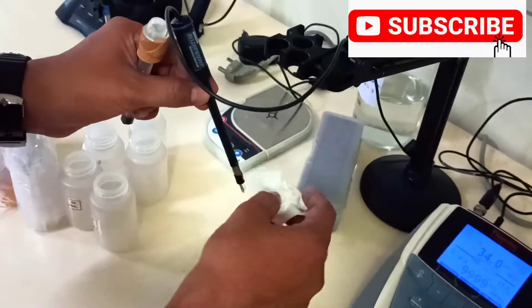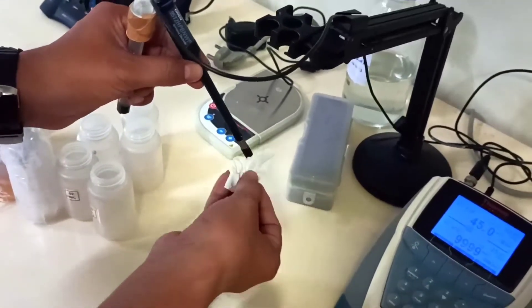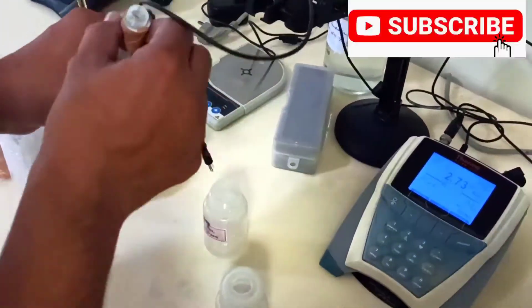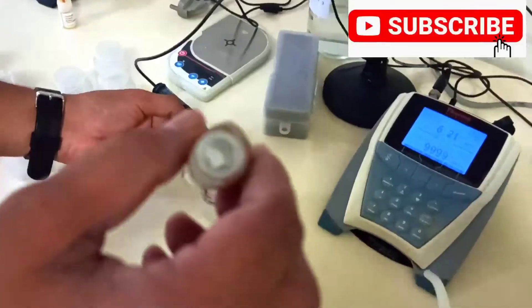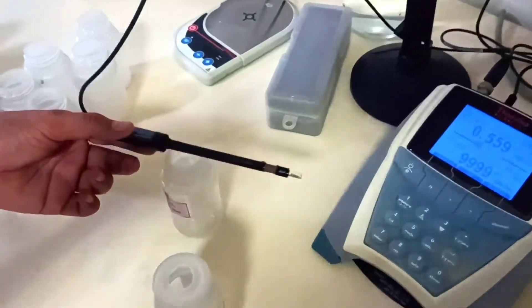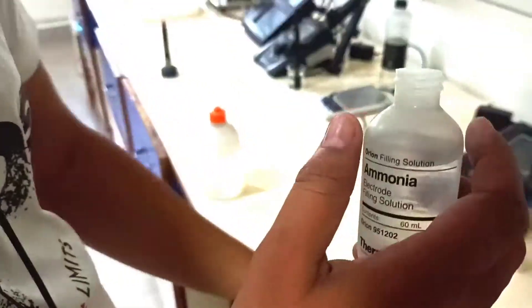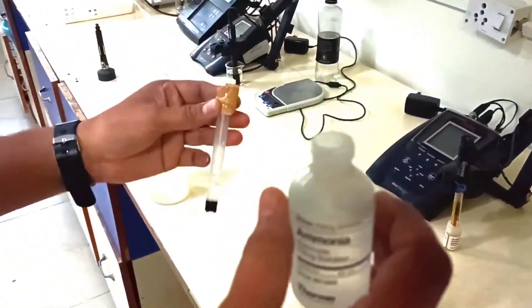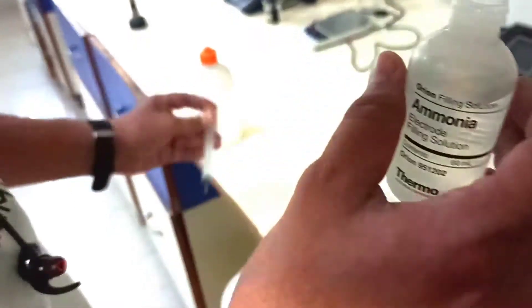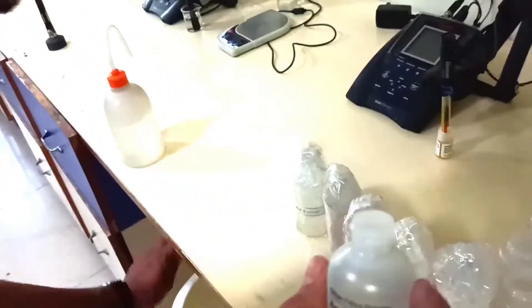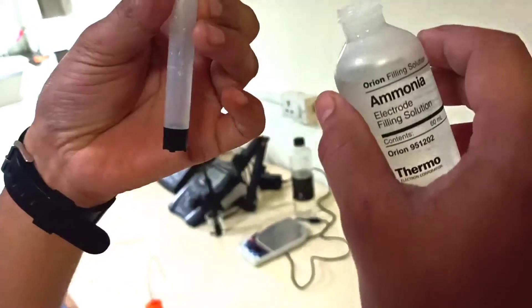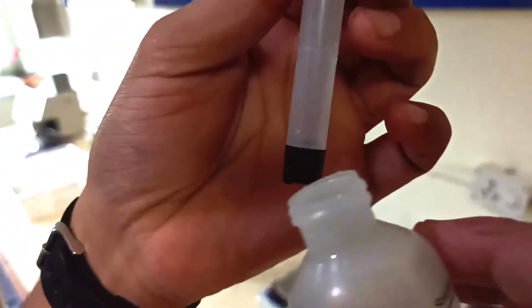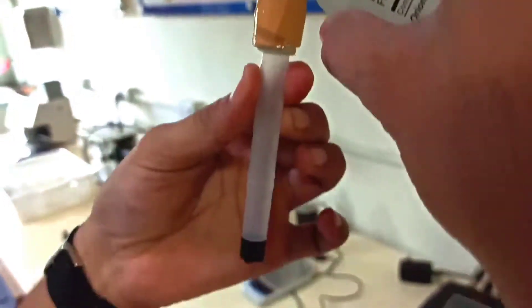For connecting with us, please subscribe our channel for getting more videos. With the help of tissue paper, we are drying this bulb very carefully. Now we are going to fill the electrolyte filling solution in the outermost case. First of all, we rinse with electrolyte filling solution, take very little, and fill up to the mark.